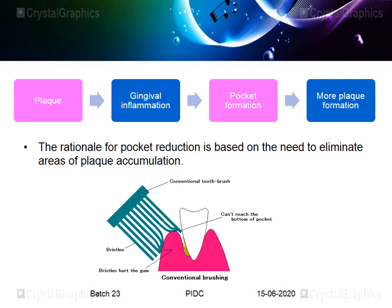This creates a vicious cycle: plaque accumulation leads to gingival inflammation; if untreated, it progresses to pocket formation; pockets then prevent efficient cleaning, leading to more plaque accumulation and deeper pockets. The rationale for pocket reduction is based on eliminating areas of plaque accumulation. Plaque deep inside a pocket is very difficult to remove with a conventional toothbrush, so the dentist must assist with professional scaling and root cleaning.